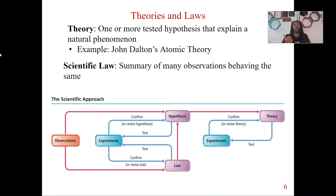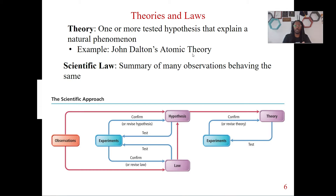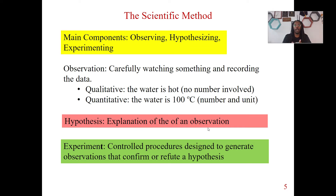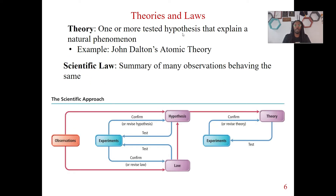I want to talk about theories and laws. So let's talk about theories first. A theory is one or more tested hypothesis that explain a natural phenomenon. With the theory, you have one or more tested hypotheses. A hypothesis is the explanation of an observation, so that means something has been observed, and we're testing that hypothesis, and the theory is going to explain what's going on.